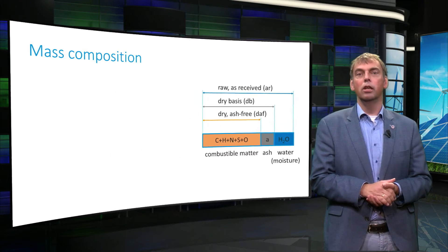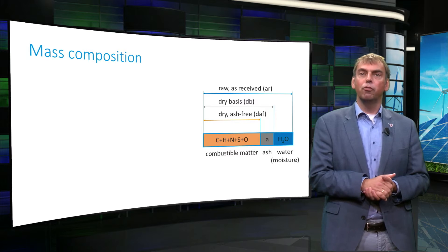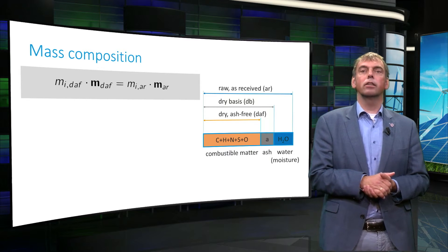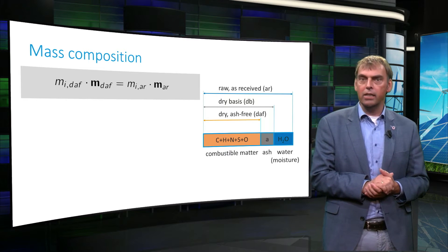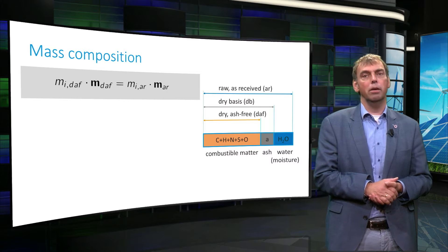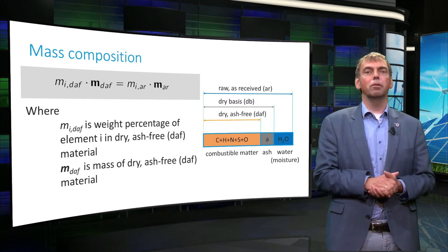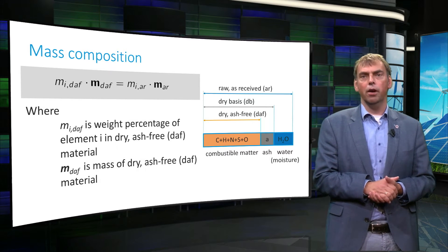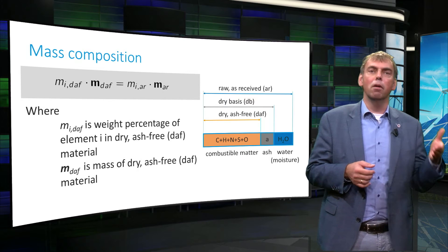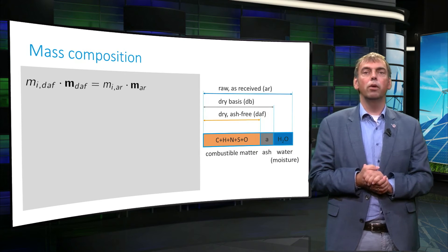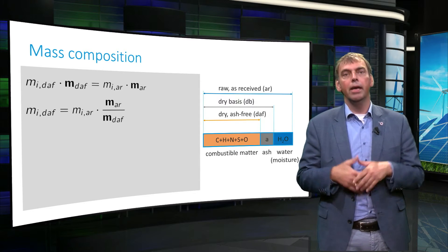One can calculate the composition given on one basis into the other basis. As an example, we first set up an equation that states that the total mass of an element i, for example carbon, on a dry and ash-free basis is equal to the mass of the same element i on an as-received basis. So, the mass percentage of the element i times the mass in the dry and ash-free basis is equal to the mass percentage of the element i times the mass in the as-received basis.